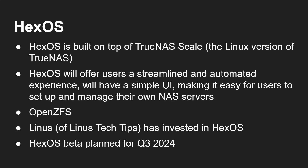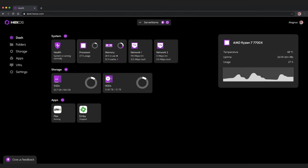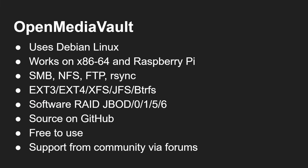There's also a new OS coming called HexOS. As of making this video it's still not available — there's a beta signup waiting list. It's built on top of TrueNAS Scale and aims for a streamlined, automated experience with a simple UI, making it easy for users to set up and manage their own NAS server. It supports OpenZFS due to its TrueNAS heritage. Linus of Linus Tech Tips has invested in HexOS, with a beta expected around Q3 2024. They've published a screenshot showing a simplified dashboard.